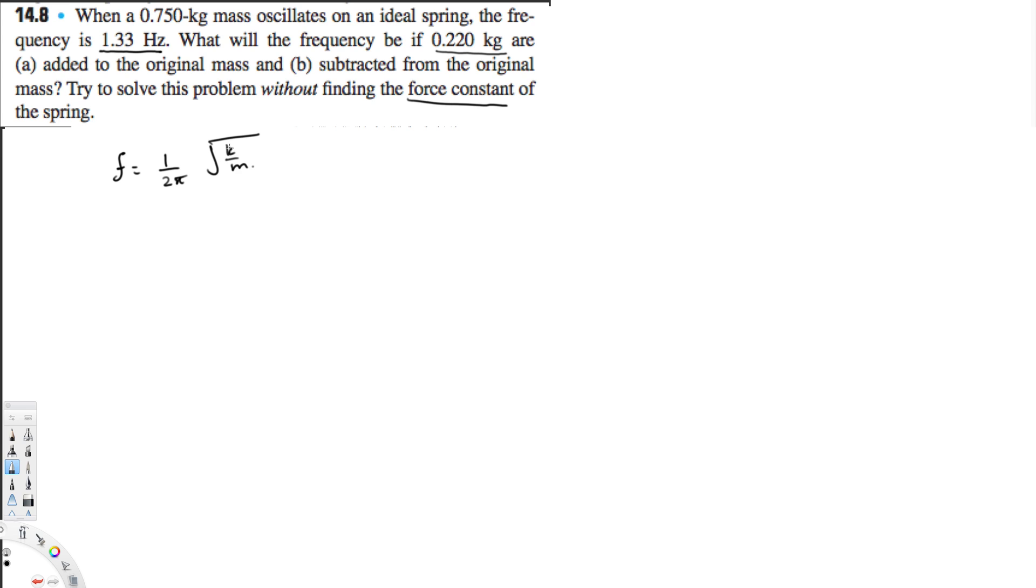without finding the constants. Let's see how we can do this. Our purpose is to find the mass. Let's bring the mass to the other side, so frequency times square root of mass is going to equal square root of k over 2π.